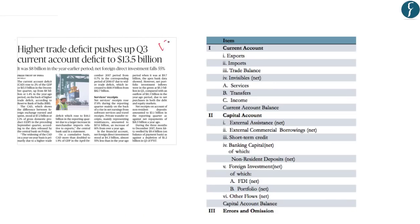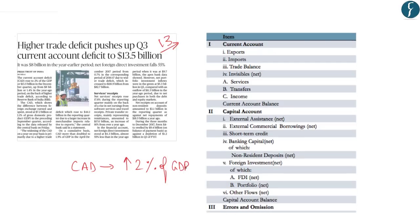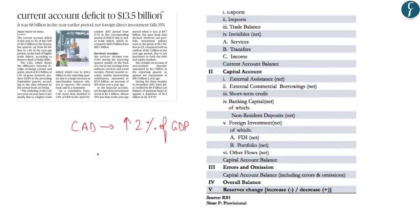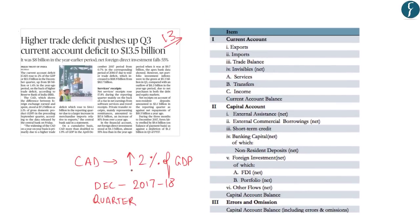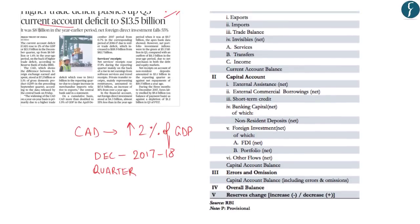The next news appears on page number 13. The news reads: 'Higher Trade Deficit Pushes Up Q3 Current Account Deficit to 13.5 Billion Dollars.' The current account deficit rose to 2% of GDP in the December quarter of 2017-18. It is important to know about current account deficit as a question has already been asked in the year 2014.